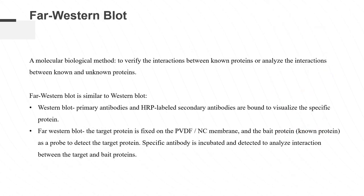Far Western blot is a molecular biology method for detecting protein-protein interactions. It can verify the interactions between known proteins, or analyze the interactions between known and unknown proteins. Far Western blot is similar to Western blot. For Western blot, primary antibodies and HRP-labeled secondary antibodies are used to visualize the proteins on the membrane. For Far Western blot, the target protein is fixed on the PVDF or NC membrane, and the bait protein is used as a probe to detect the target protein on the membrane. A specific antibody is then incubated and detected to analyze the interaction between the target protein and the bait protein.